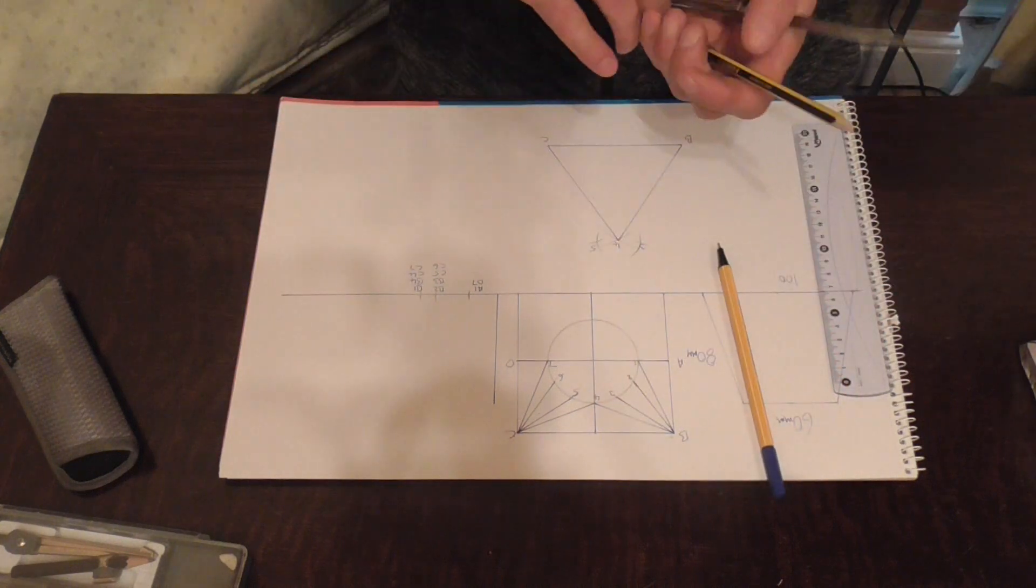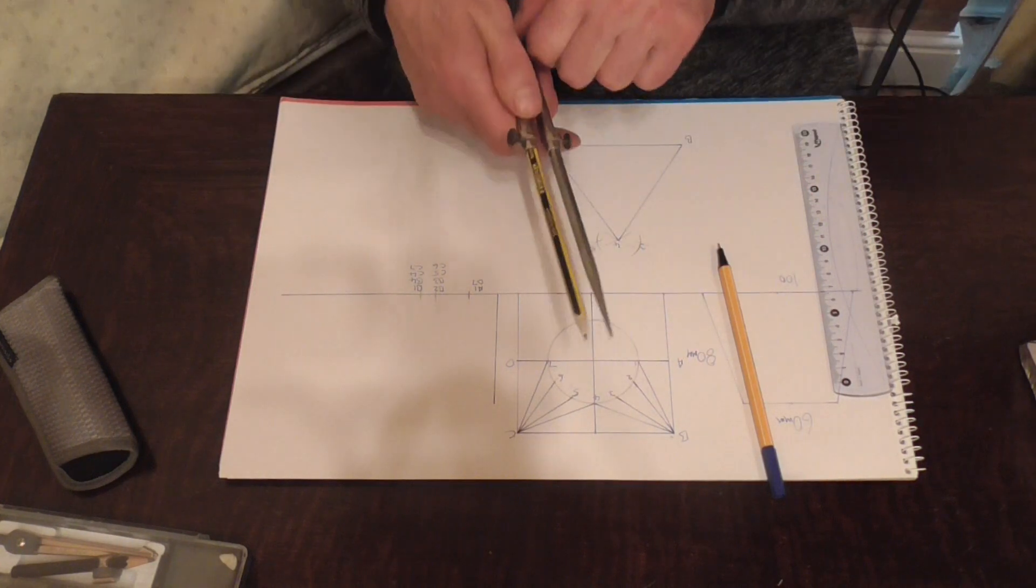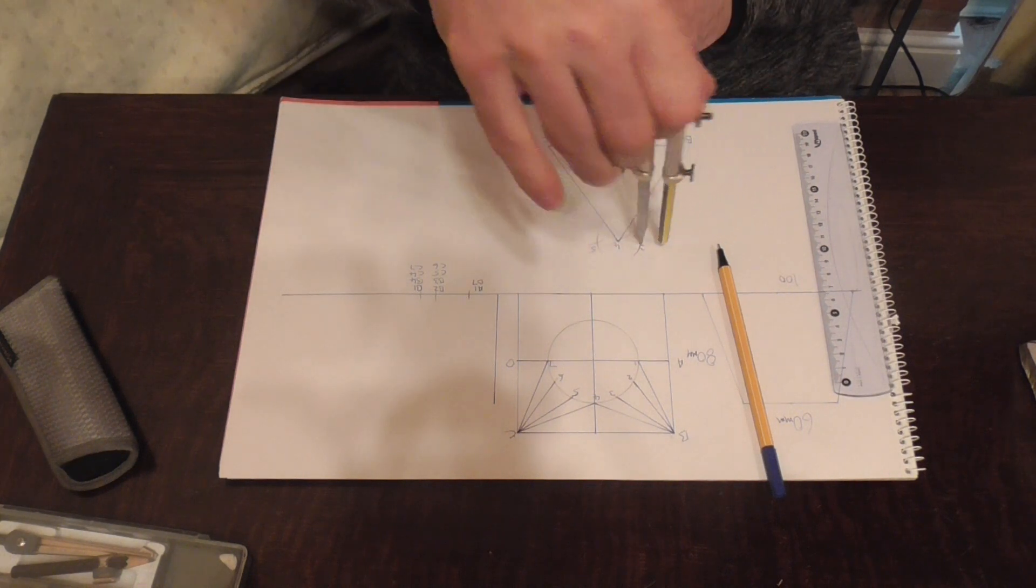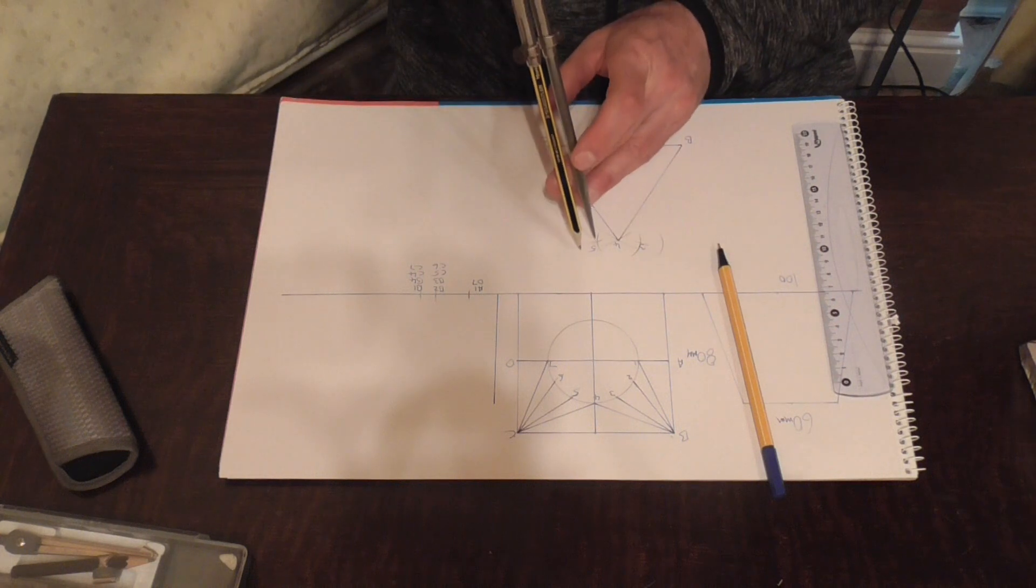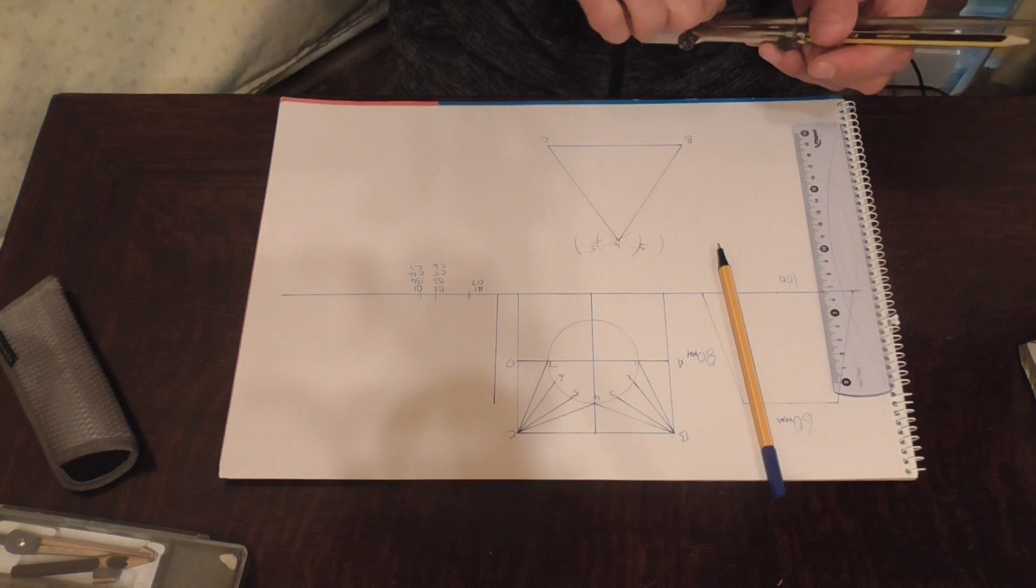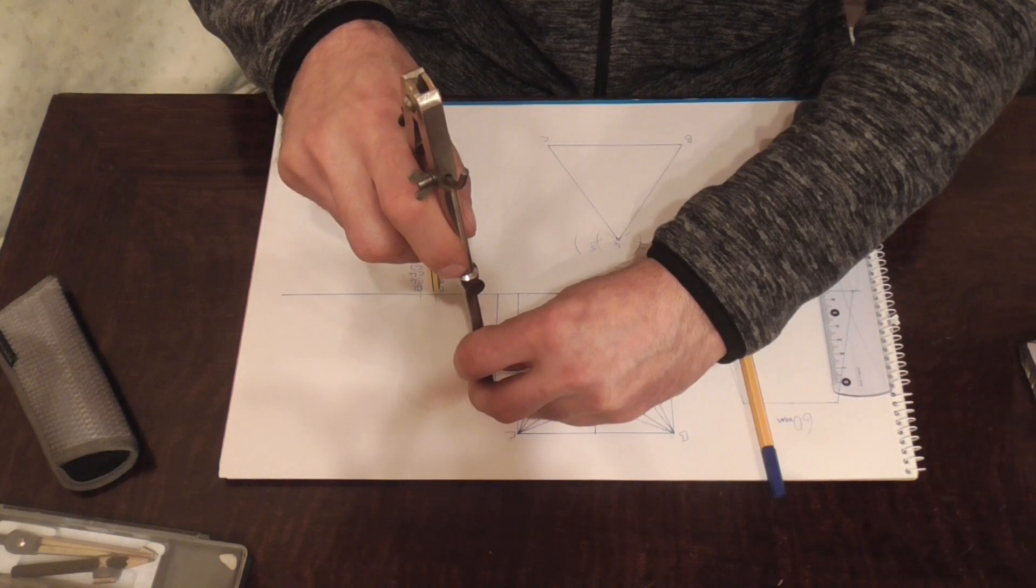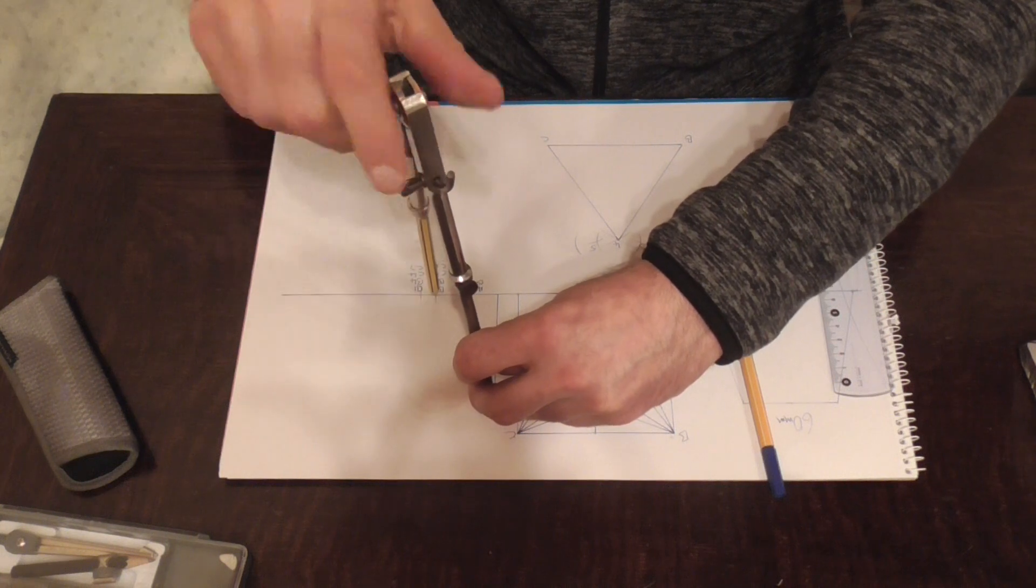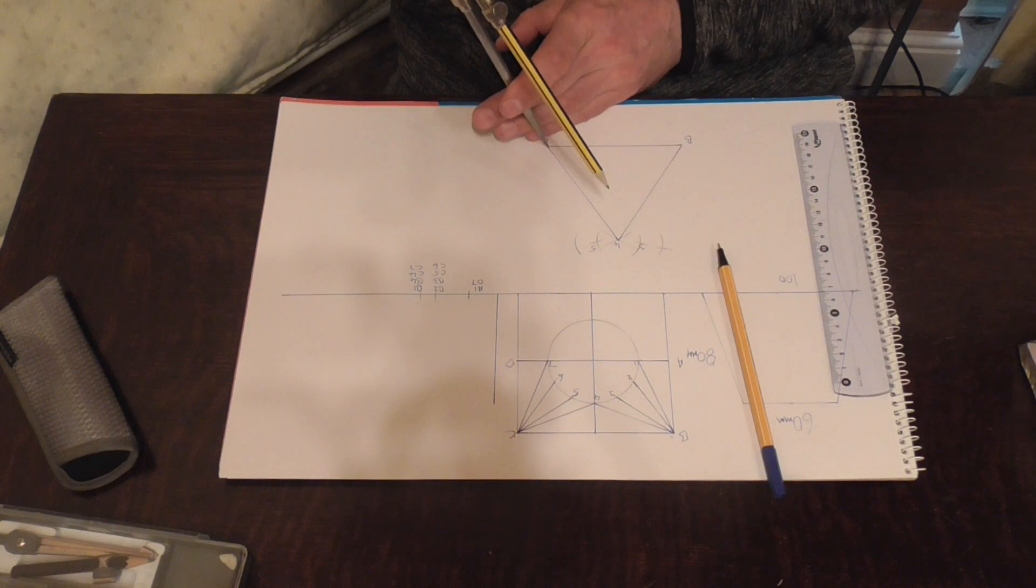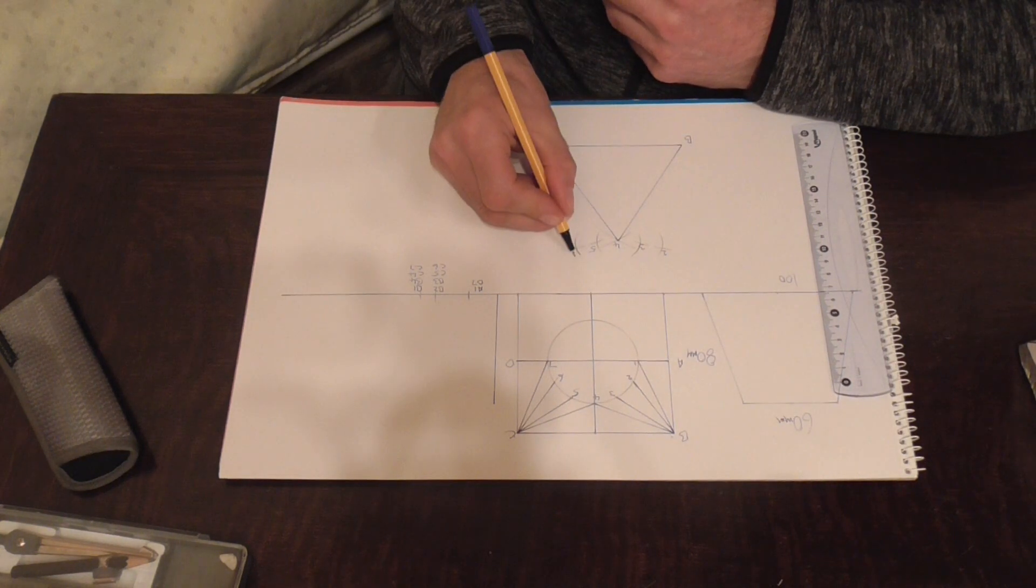And we take our dividers, we use the same division there, just open them back up to that. From the centre of A, put an arc in, and the same there. And we label those 2 and 6.